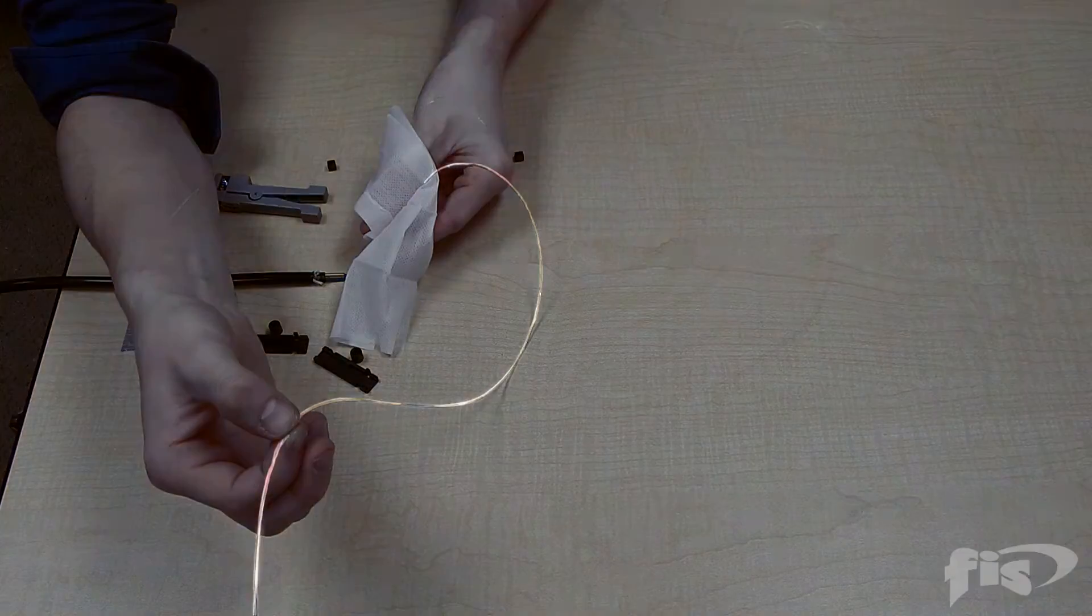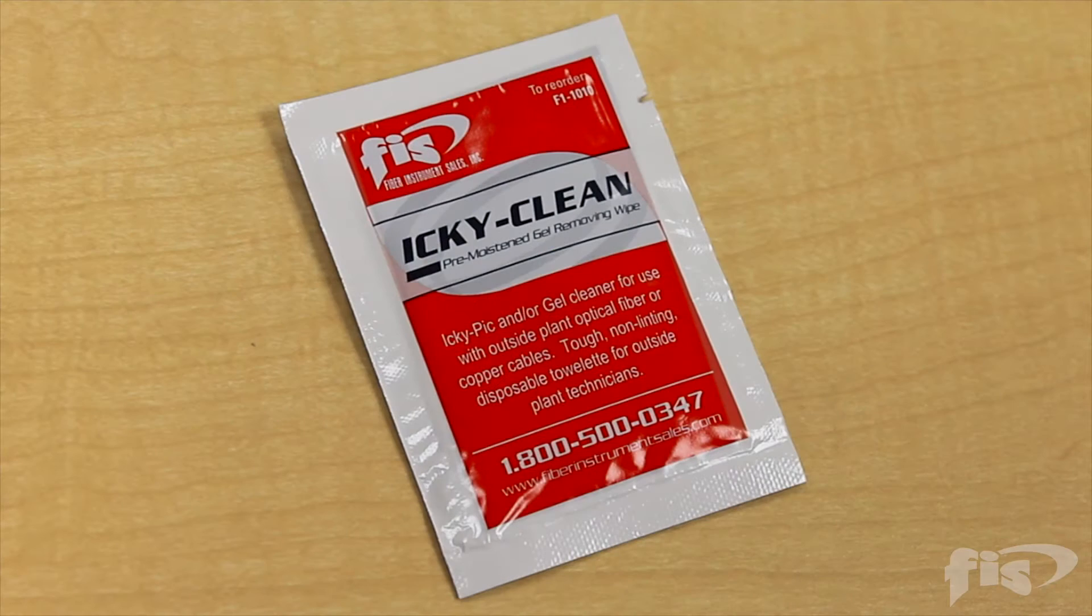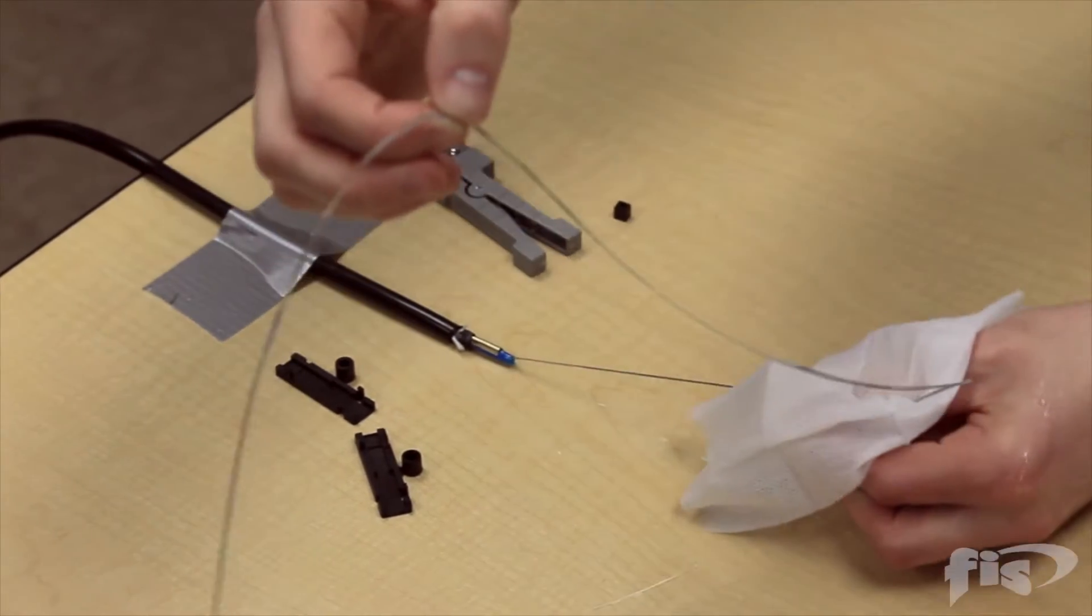It is important to remove all of the Icky Pick from the fibers in the subunits. Take the FIS Icky Clean and completely remove the Icky Pick from the fibers.